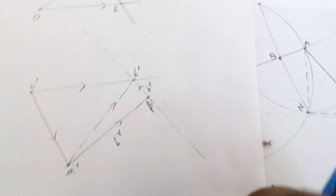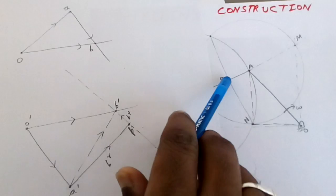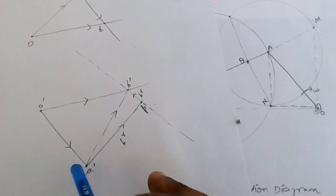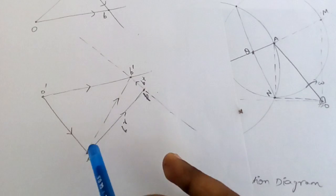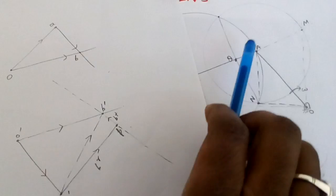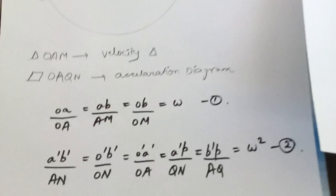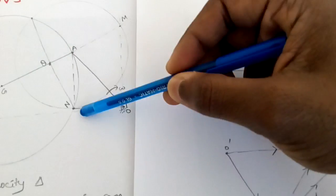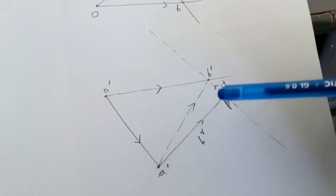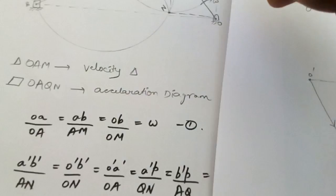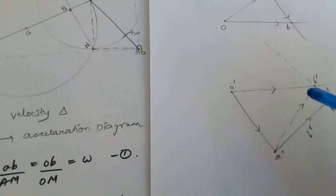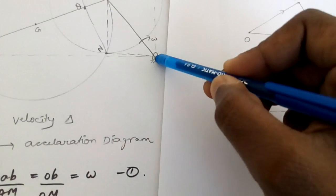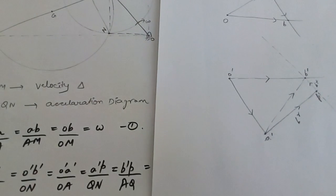This smaller triangle corresponds to this smaller triangle and this bigger triangle corresponds to this bigger triangle. Triangle O-A'-N corresponds to triangle O'-A'-B', and triangle A'-N-Q corresponds to triangle A'-B'-P. So using the similar triangle concept in these two triangles: A'B' / AN = O'B' / ON for the smaller triangles, and then B'P / AQ for the larger triangles.